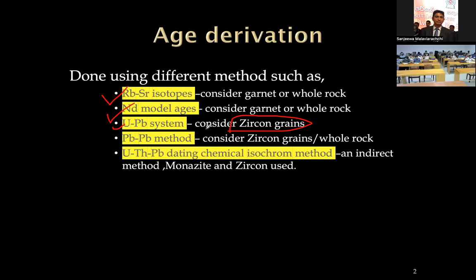Suppose you have one rock layer intruded by a dike. Without age dating you can't say the exact time — you don't know at how many million years ago that dike was emplaced. But you can determine relative timing: the dike has a younger age compared to the rock layer because the rock layer had to be there for the dike to intrude into it. Relative ages are also important in geological mapping.